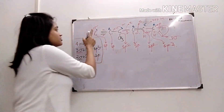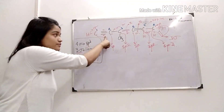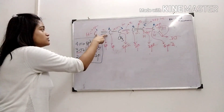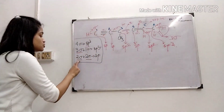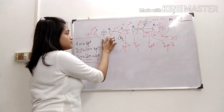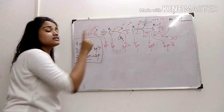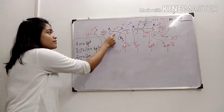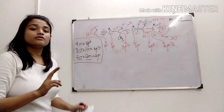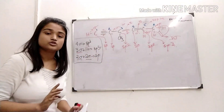To recap: the first carbon is involved in one sigma bond with the second carbon and one sigma bond with hydrogen — two sigma and two pi, so it is sp. The second carbon forms a sigma bond with the first and a sigma bond with the third carbon — two sigma and two pi bonds, so it is also sp hybridized.